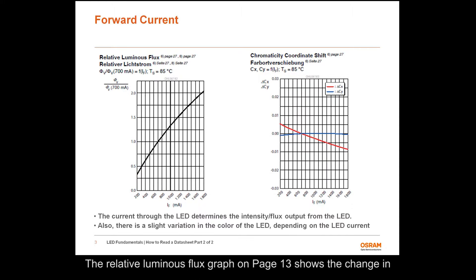The relative luminous flux graph on page 13 shows the change in flux with respect to forward current. The value on the y-axis is a relative value which represents the ratio of flux at a specific current with respect to the binning current, at a solder point temperature of 85 degrees C. For example, the flux output at 1400 milliamps would be roughly 1.7 times the value of flux at 700 milliamps.